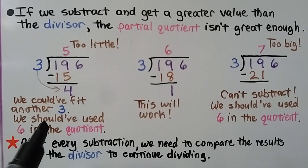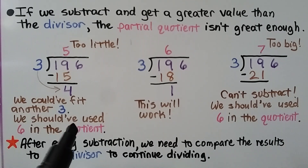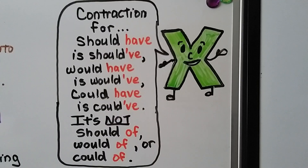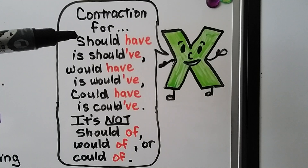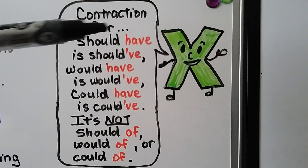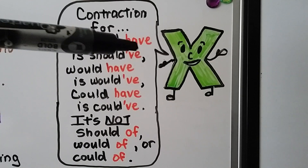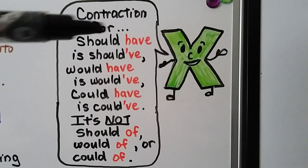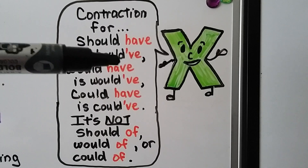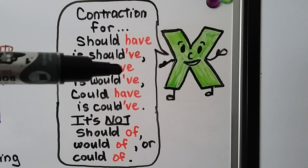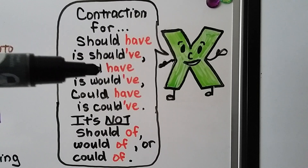I know this is math, but one of the biggest mistakes many people make is with contractions: 'should have' should be written as should with an apostrophe VE — 'should've' — and 'would have' should be 'would've', not 'should of' or 'would of'.